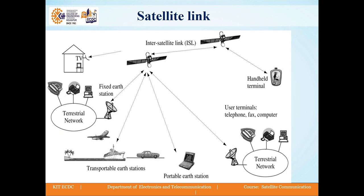Before going towards satellite network architecture, let us see satellite link. In the figure, we can see there are inter-satellite links along with many links with handheld terminals and user terminals like telephone, fax, and computers. There is also a link with portable earth station, transportable earth station, and fixed earth station. Whatever network is on the ground is the terrestrial network. The satellite signal is received by multiple receivers, which can be movable, fixed, or handheld.